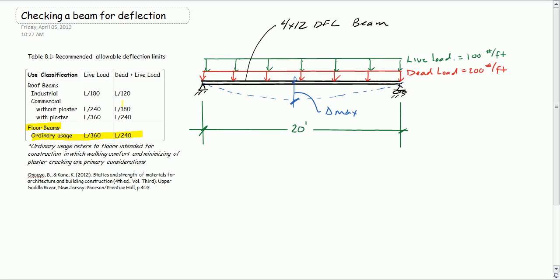So we need a few things first of all. We need the properties of our beam. It's douglas fir larch, so we're going to look that up in a table. We're going to find the modulus of elasticity E is equal to 1700 KSI, and a 4 by 12 has an I, a moment of inertia, of 415.28 inches to the fourth.